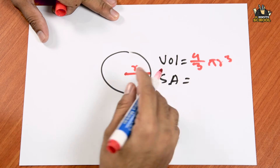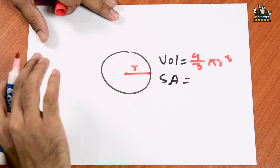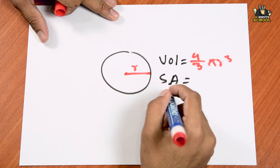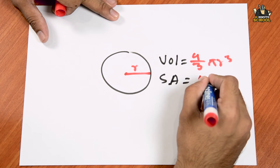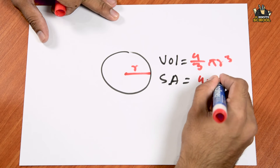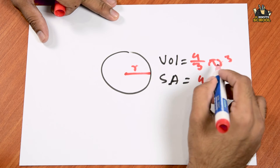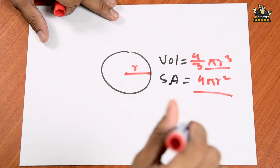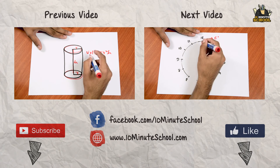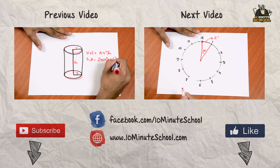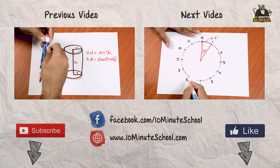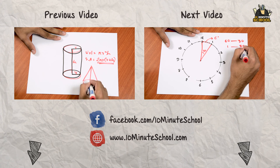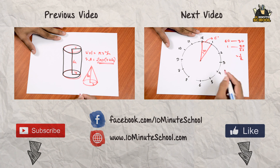The surface area is calculated over the whole sphere. The surface area formula is 4πR squared. So this is the surface area formula for a sphere. We'll see you next time.